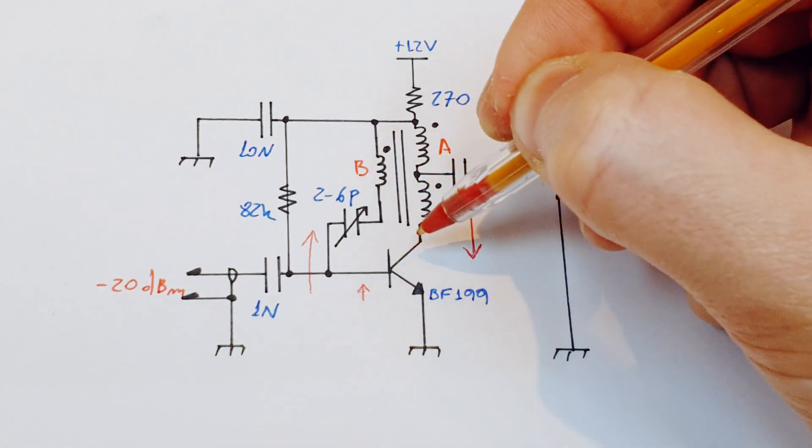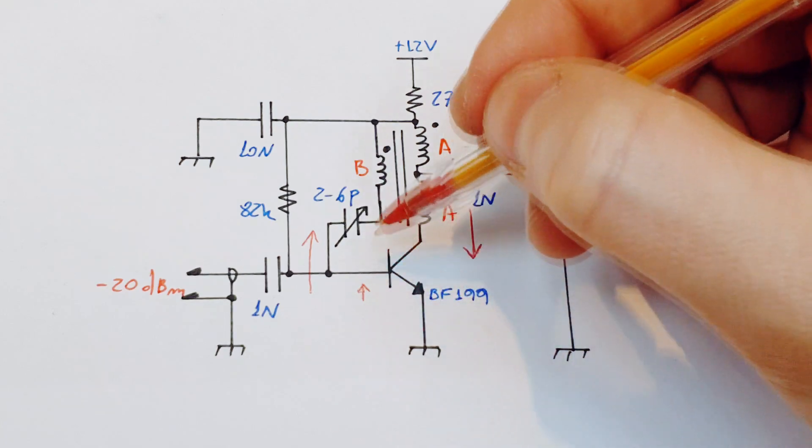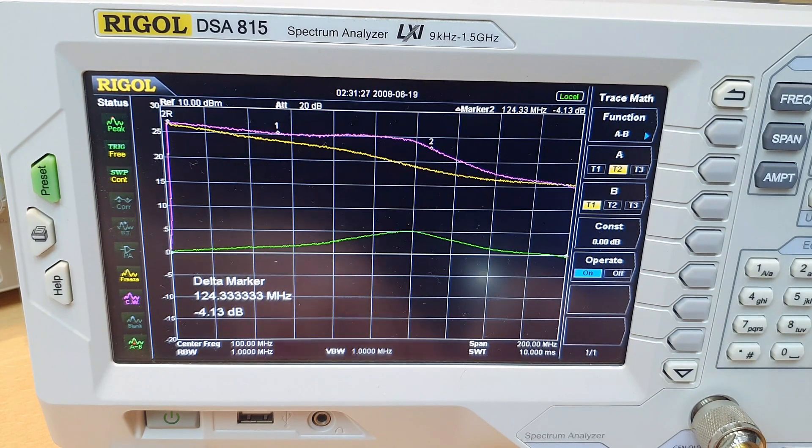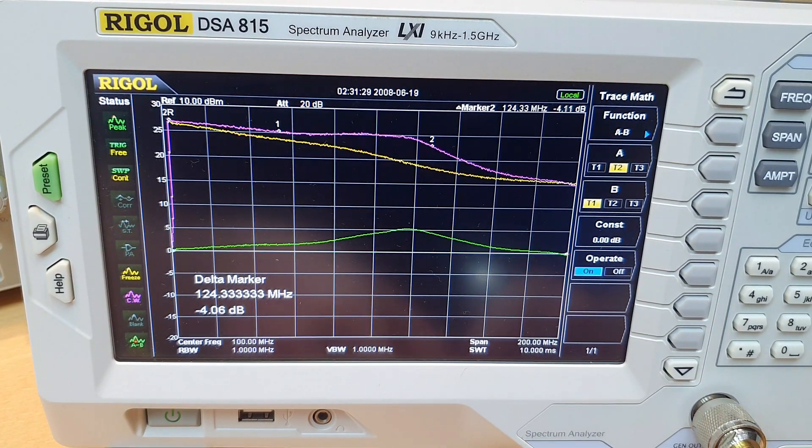So we generate here through this coupling capacitor a signal that helps the input driving current to charge and discharge the base collector capacitance, neutralizing the Miller effect. For me, it's always incredible to see the difference in bandwidth generated by this simple technique.